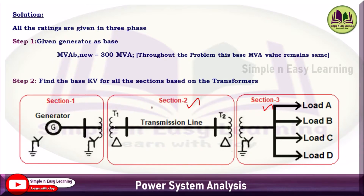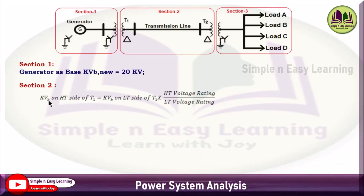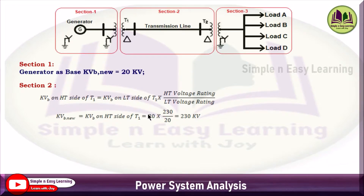Now find the base kV in all three sections. Section 1: since we take the generator as the base, the generator kV rating is 20 kV, so base kV = 20 kV. For Section 2: base kV on the HT side of T1 = base kV on LT side of T1 × (HT rating / LT rating) = 20 × (230/20) = 230 kV.